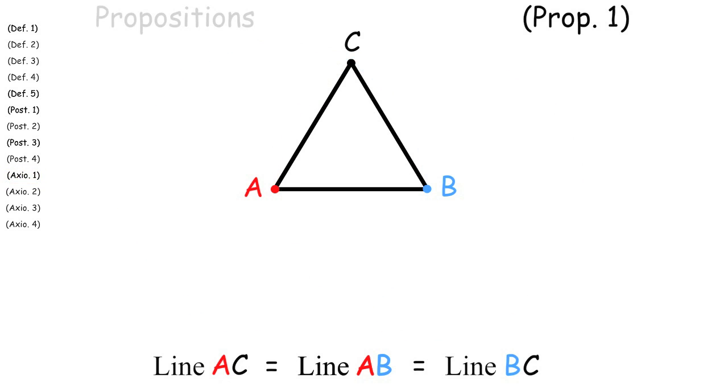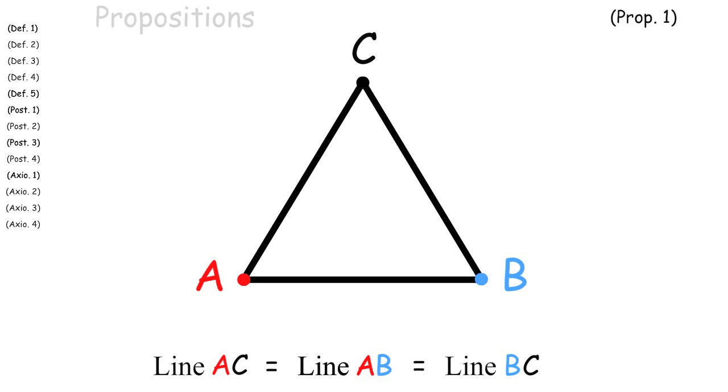So now we know for a fact that all lines are the same length and we have created a perfect equilateral triangle.